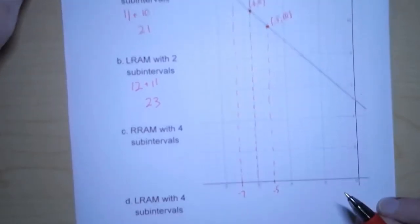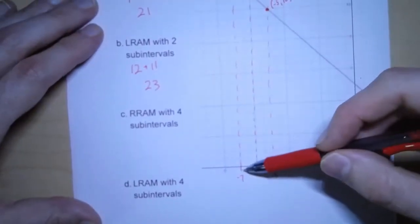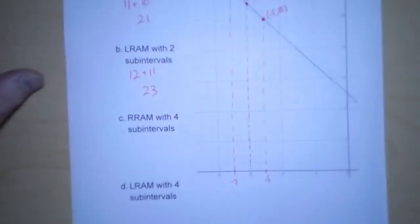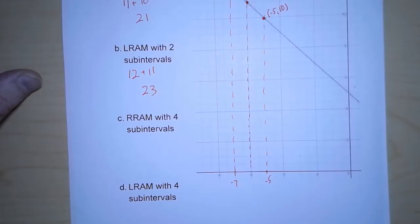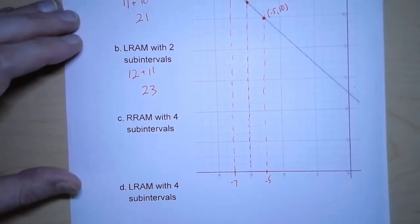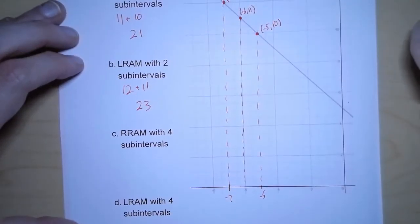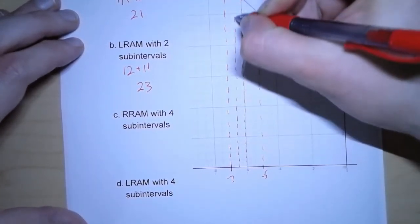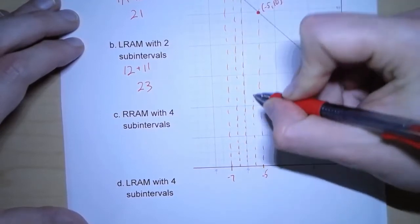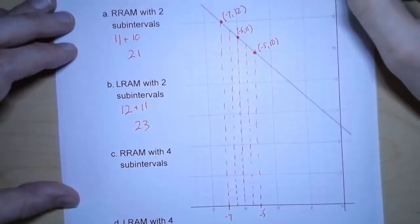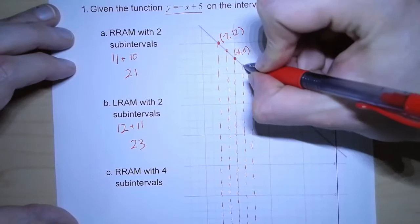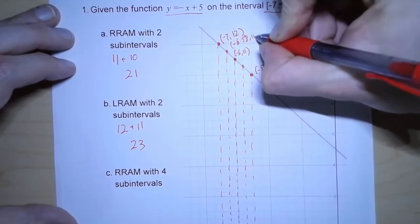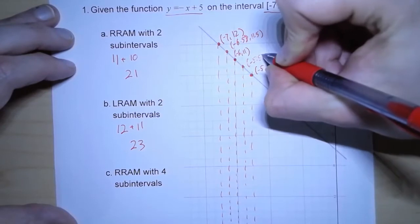We can also break this region from negative 7 to negative 5 into smaller subintervals. If we break it up into more pieces, it gives us a better approximation. For parts C and D, it says to break it up into 4 subintervals. Right now we have 2 strips, so we have to break each one in half again — giving us 4 strips instead of 2. We need to label the new points: negative 6.5 comma 11.5, and negative 5.5 comma 10.5.